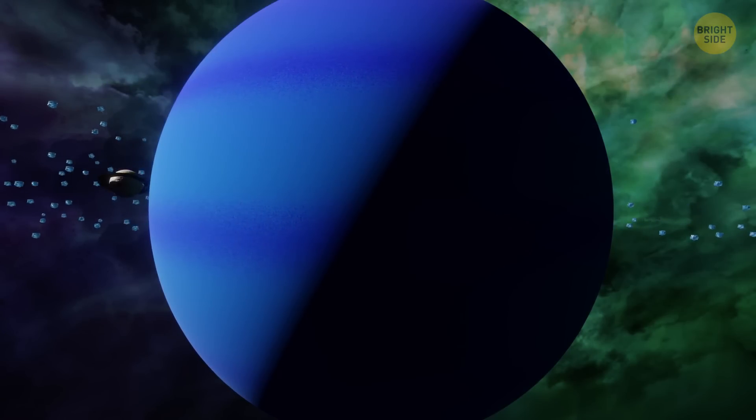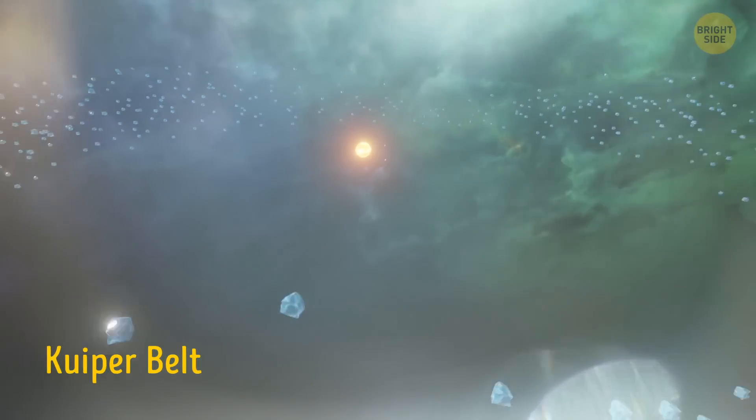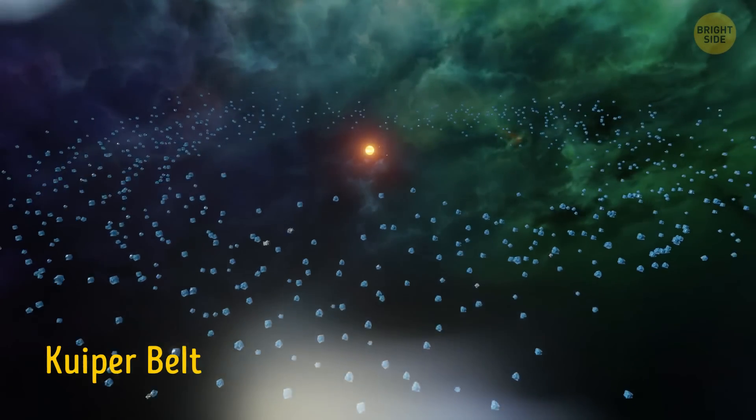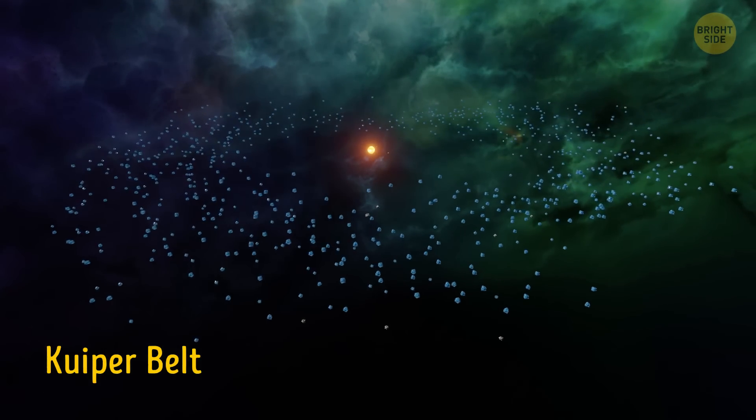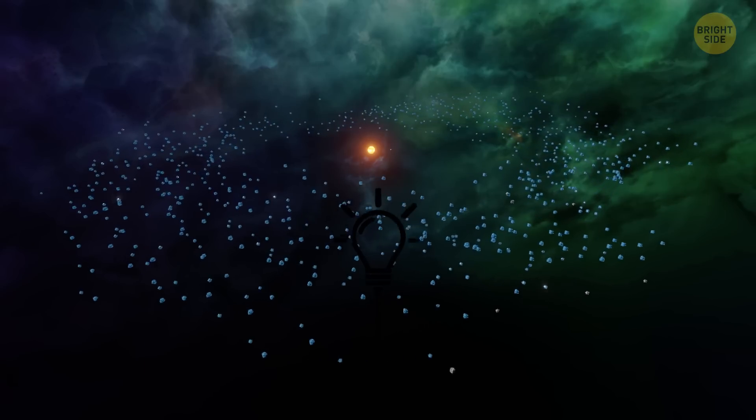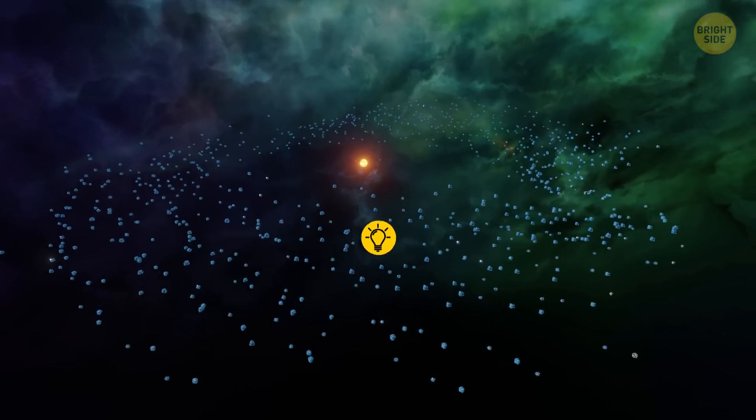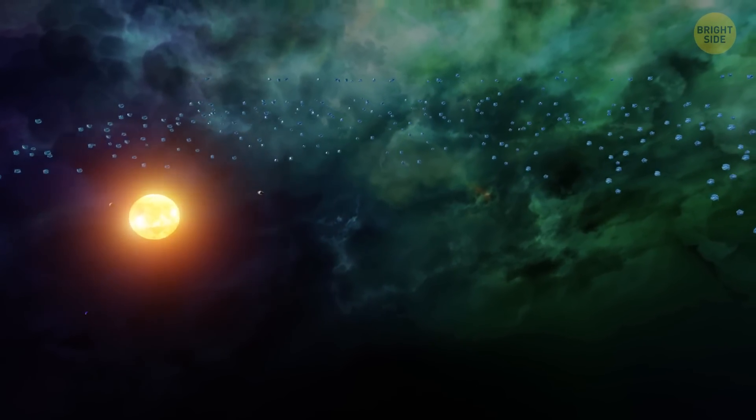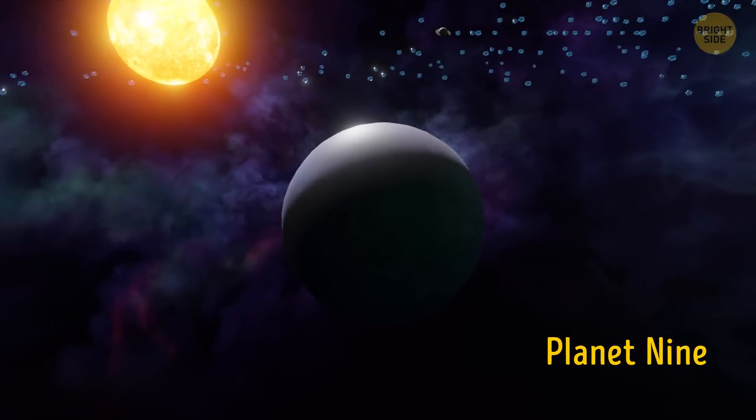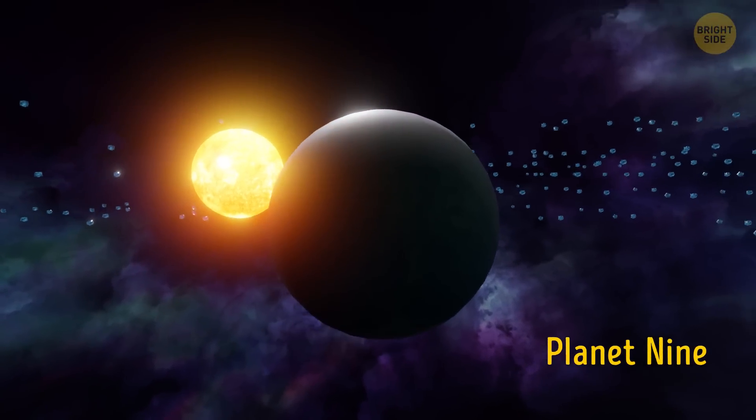Behind the orbit of Neptune lies the mysterious Kuiper Belt, filled with massive icy objects. The most curious thing about this space formation is that scientists can't explain the pattern of its movement. The only explanation they have is that Neptune might be hiding a ginormous planet from our sight. This hypothetical planet has already got the name Planet 9, and all we have to do is wait until its existence is confirmed or not.